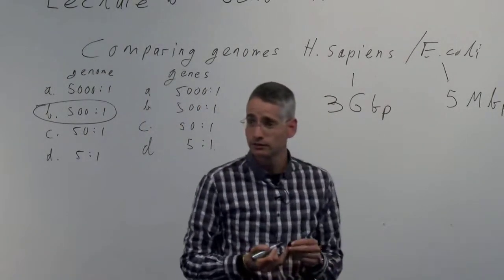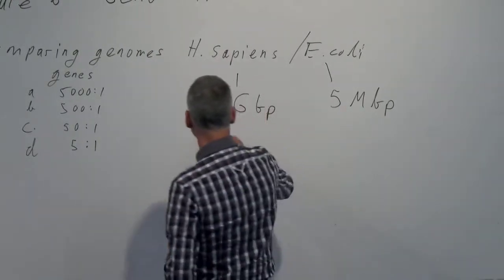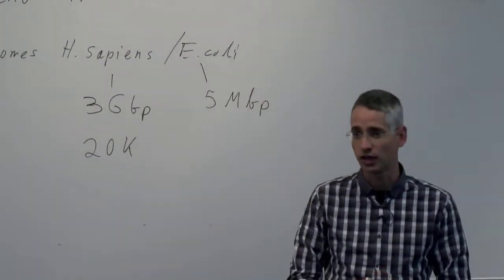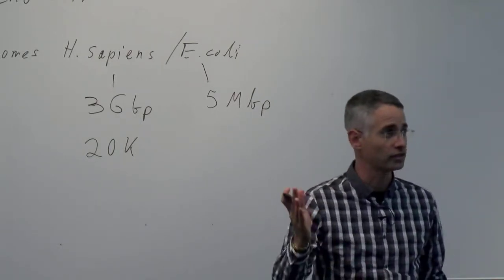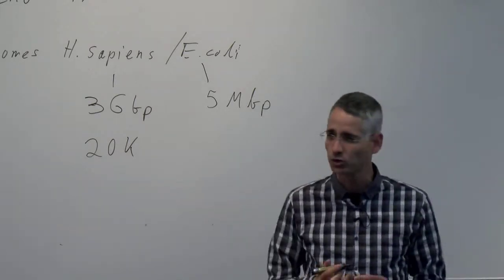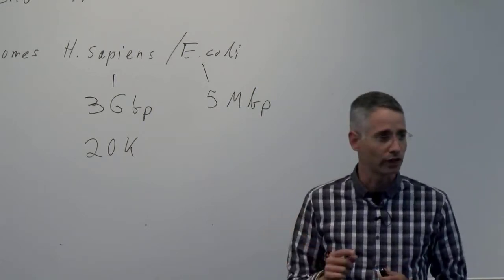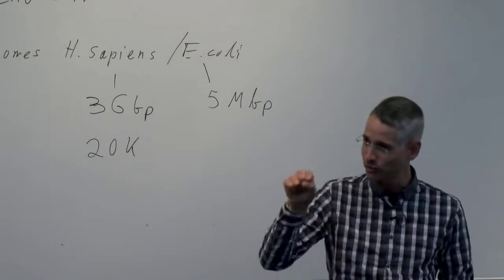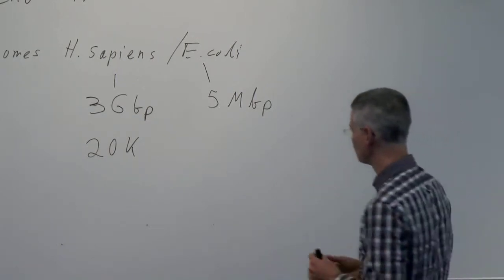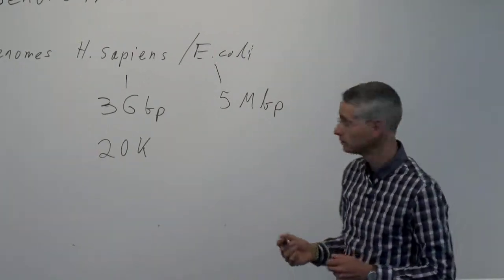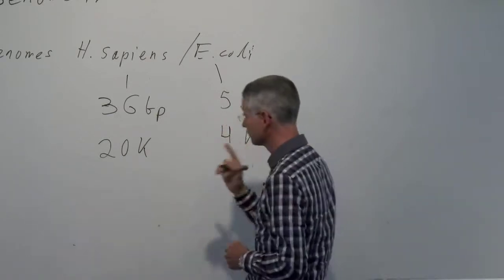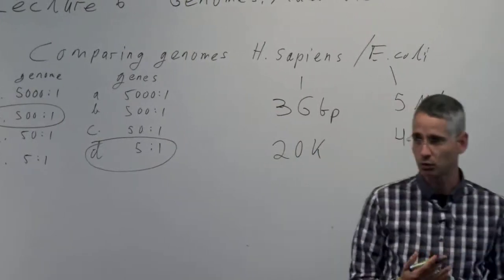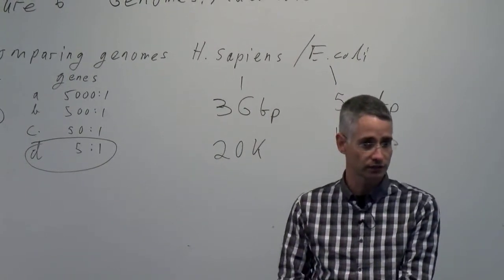In terms of number of genes, how many genes do we have? About 20,000. This was one of the big surprises when the genome project was done — people expected many more. There was even a contest where people guessed the final number of genes. E. coli has about 4,000 genes, so the gene ratio is only about 5 to 1 — a factor of 100 less than the genome size ratio. How do we explain that discrepancy?